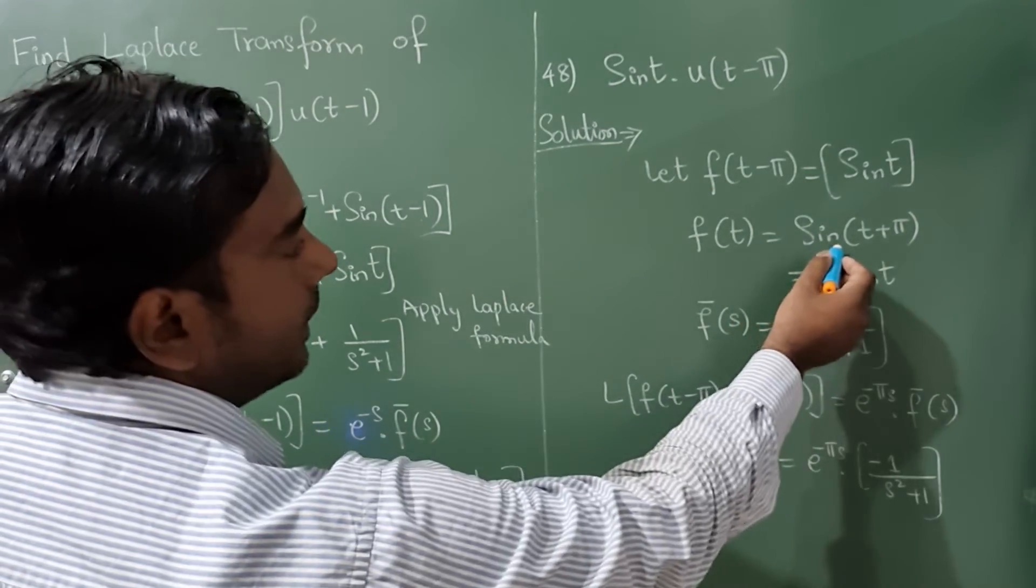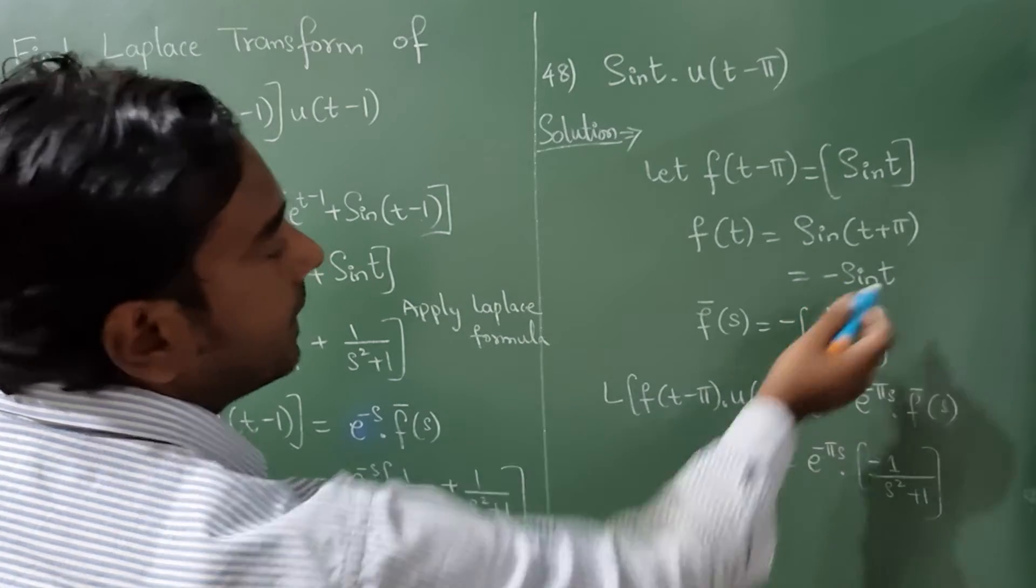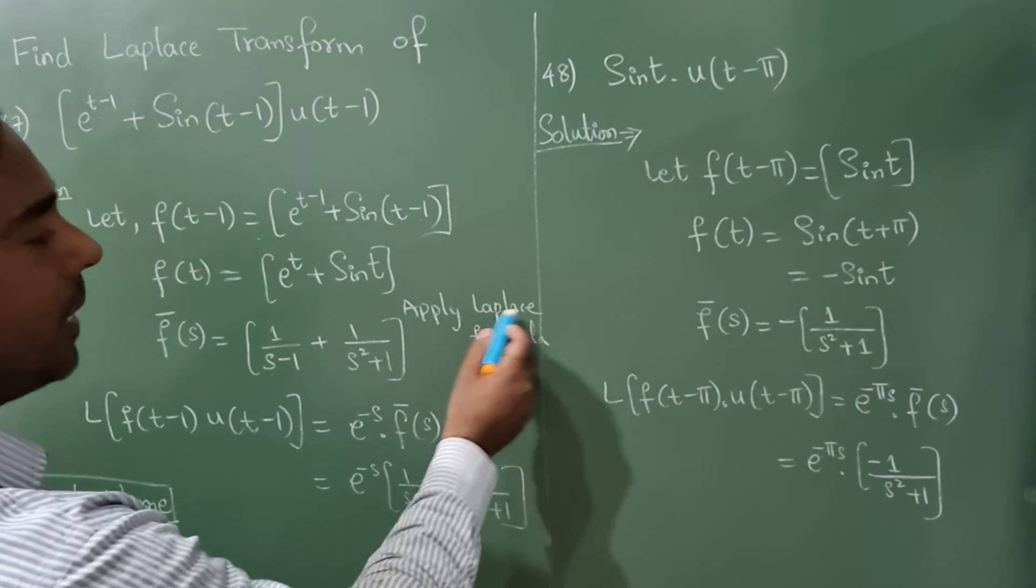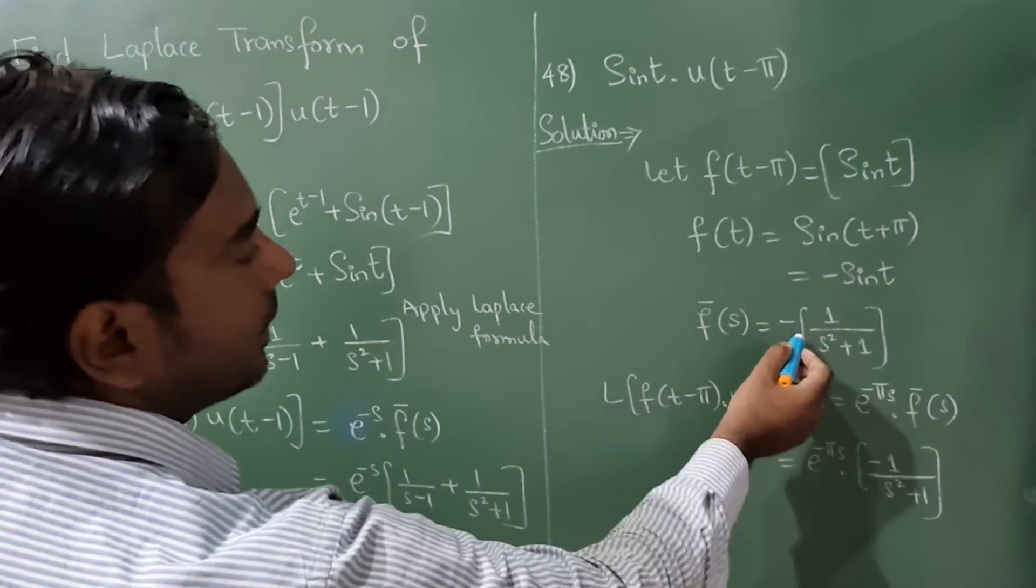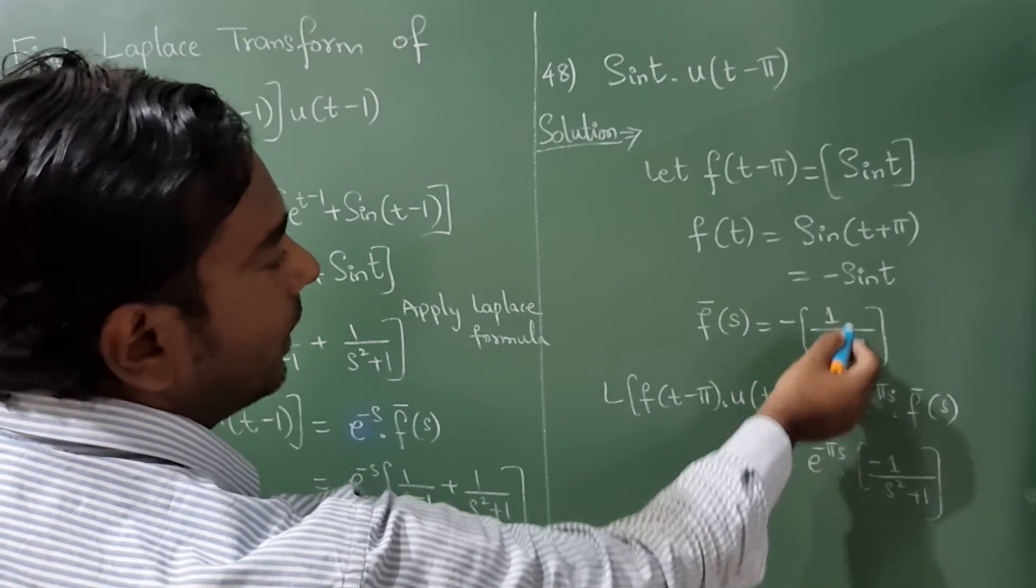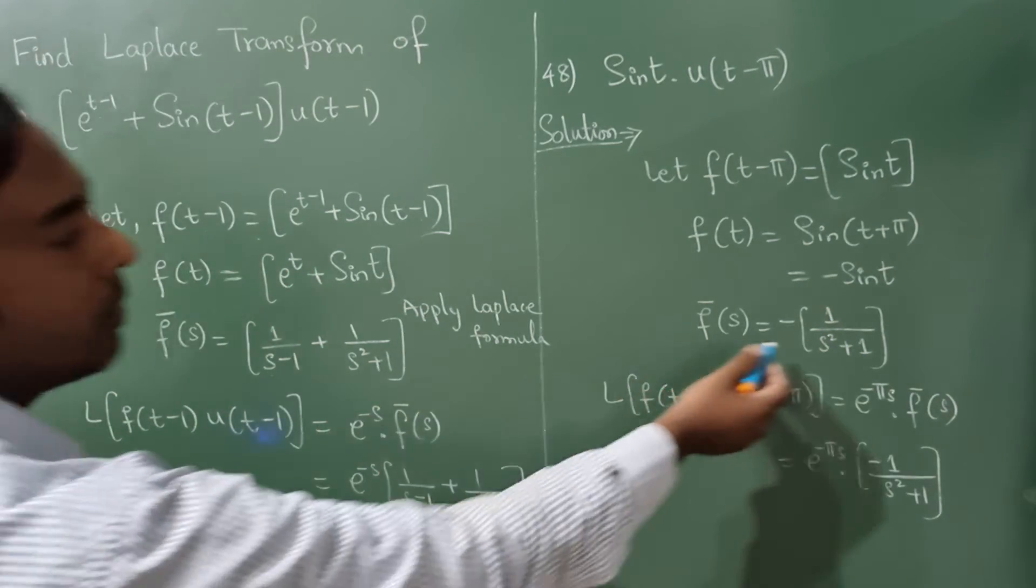Now this is in the third quadrant. So it is minus sin t. Now if you apply the Laplace formula for this then write minus outside 1 divided by s square plus 1. You can see here same formula.